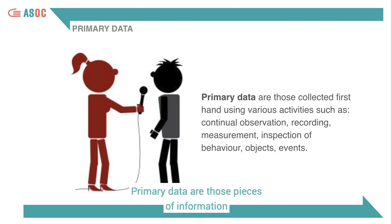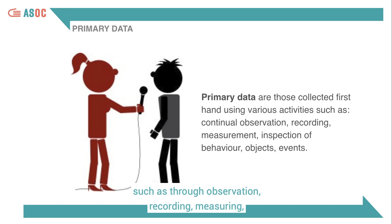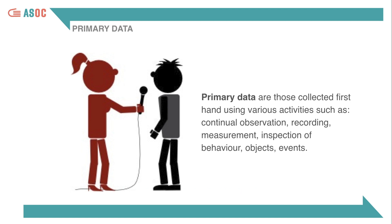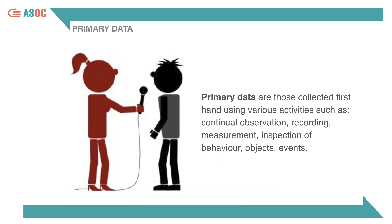Primary data are those pieces of information collected firsthand by the researcher, such as through observing, recording, measuring, inspecting people, objects or events. The person who organizes a survey or an interview, for example, produces primary data.